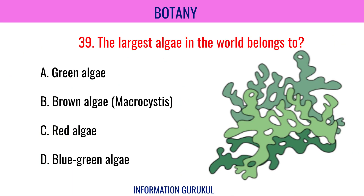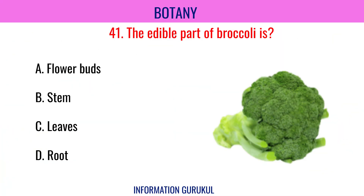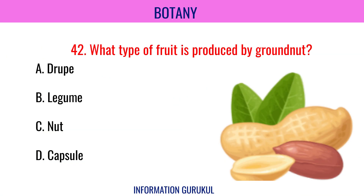The largest algae in the world belongs to brown algae — Macrocystis. What is the ploidy of endosperm in angiosperms? Triploid. The edible part of broccoli is flower buds. What type of fruit is produced by groundnut? Legume.